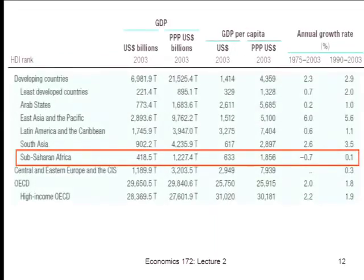This slide is from an earlier UNDP report. It shows annual growth rates from the mid-70s to about 2003, which corresponds almost exactly to a period of very slow economic growth in Africa. Looking at Sub-Saharan Africa, average per capita income growth was actually negative — negative 0.7% — which is terrible compared to other developing regions. East Asia was 6% per capita growth, driven mainly by China — almost unprecedentedly fast growth. South Asia had 2–3% per capita growth. The rich OECD countries had about 2%.